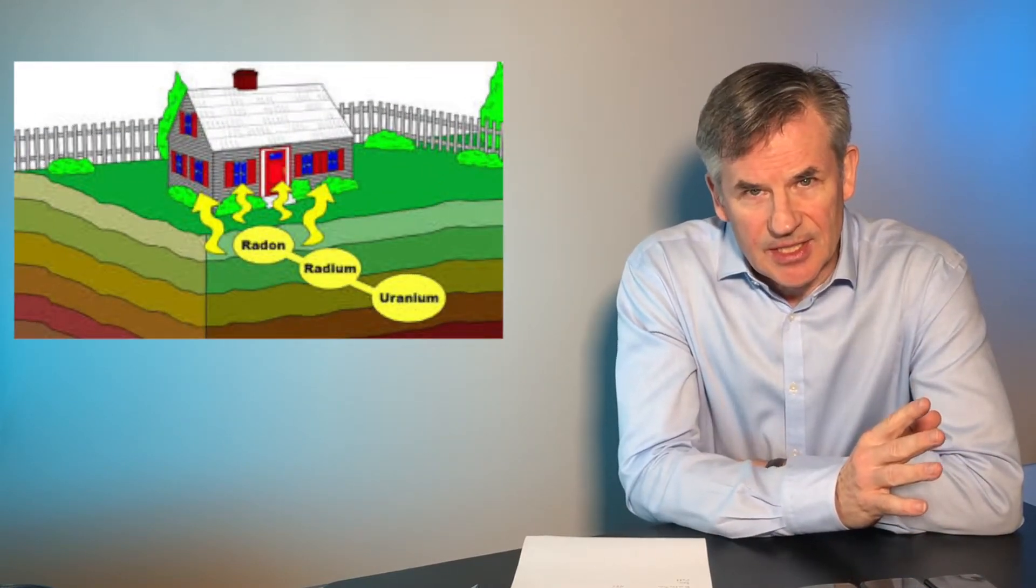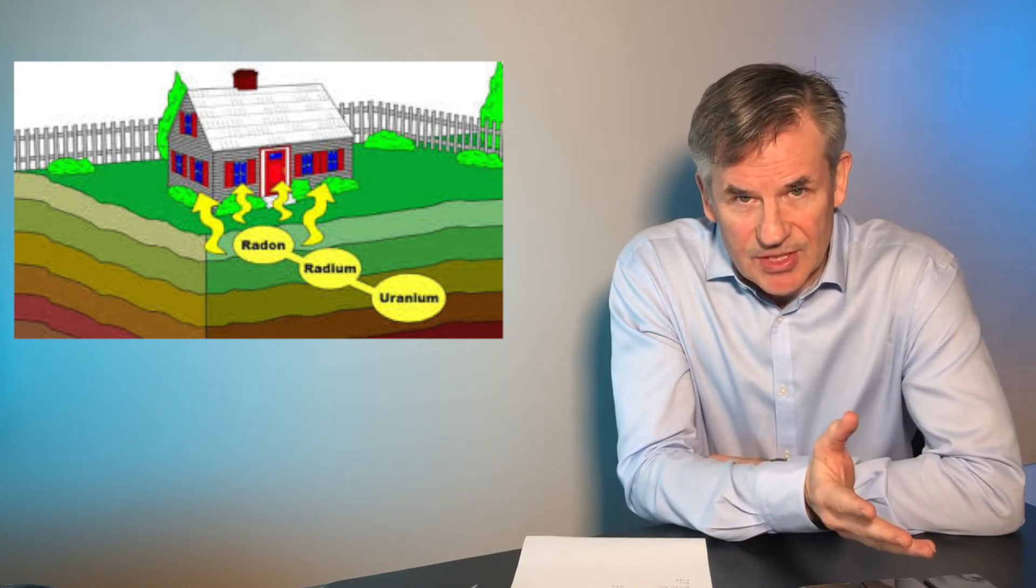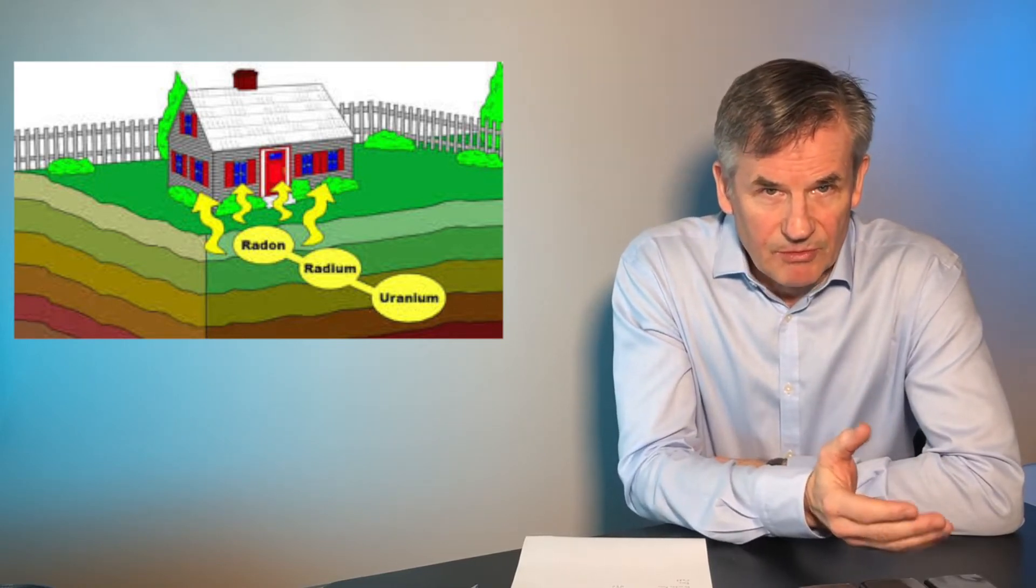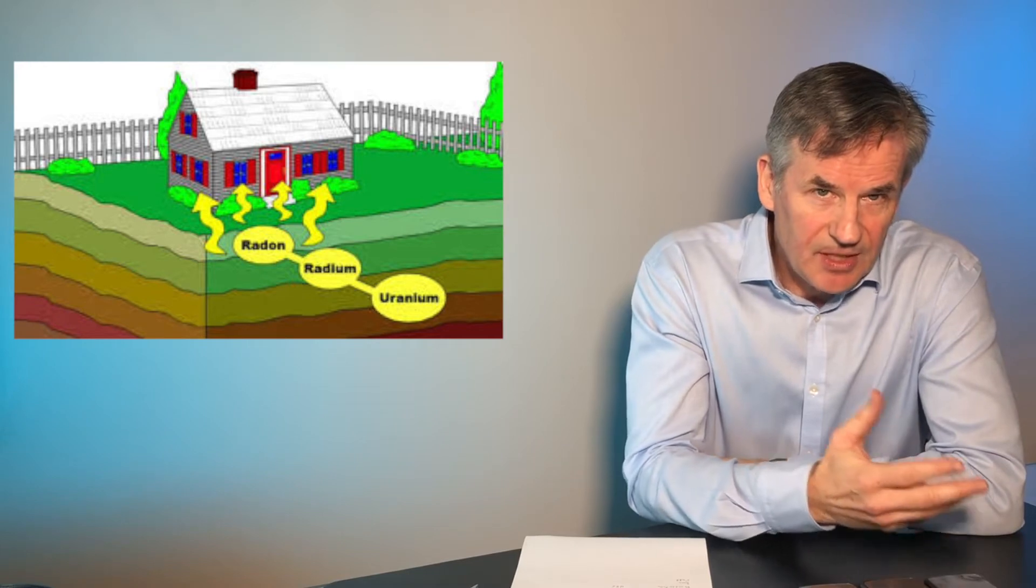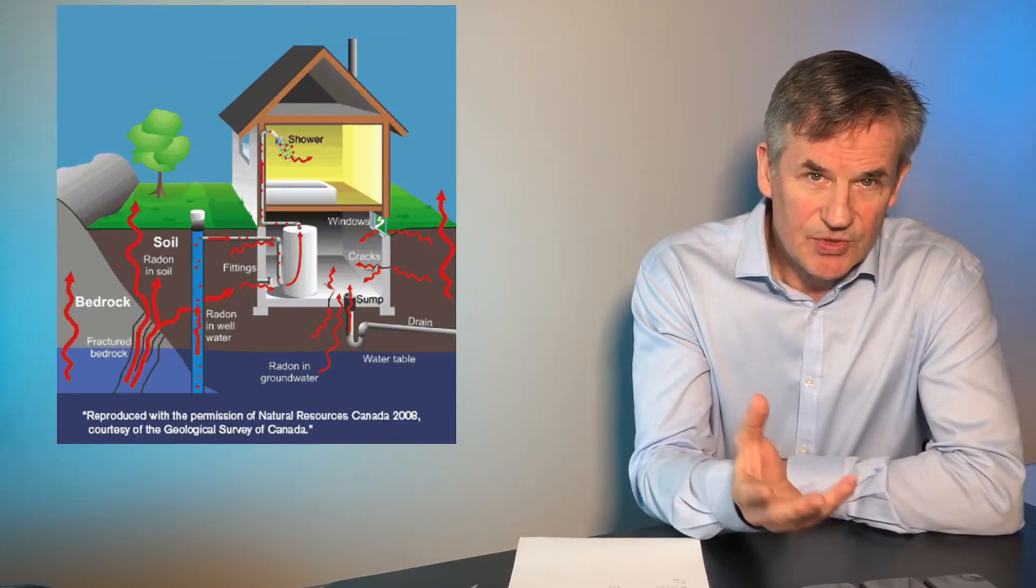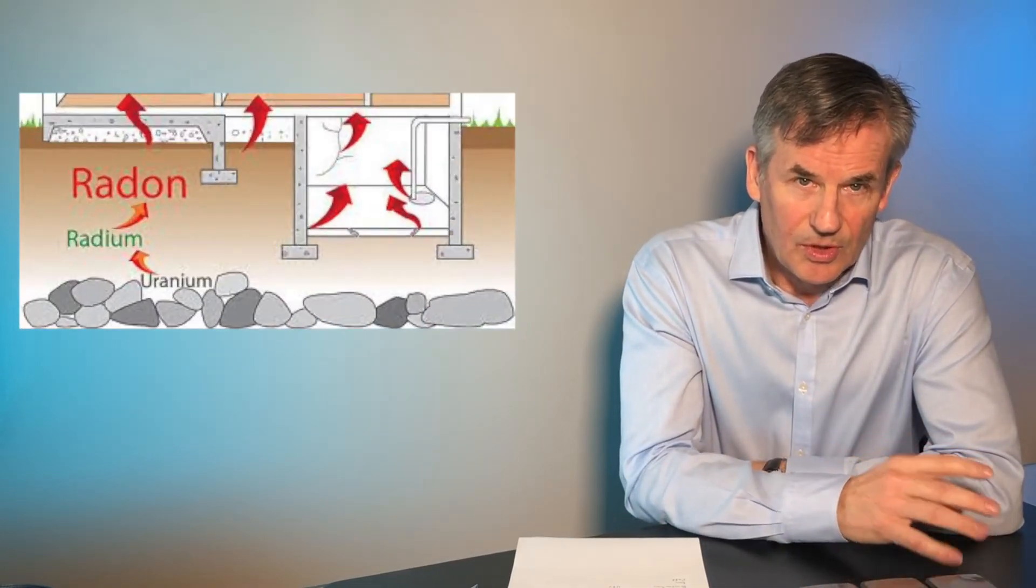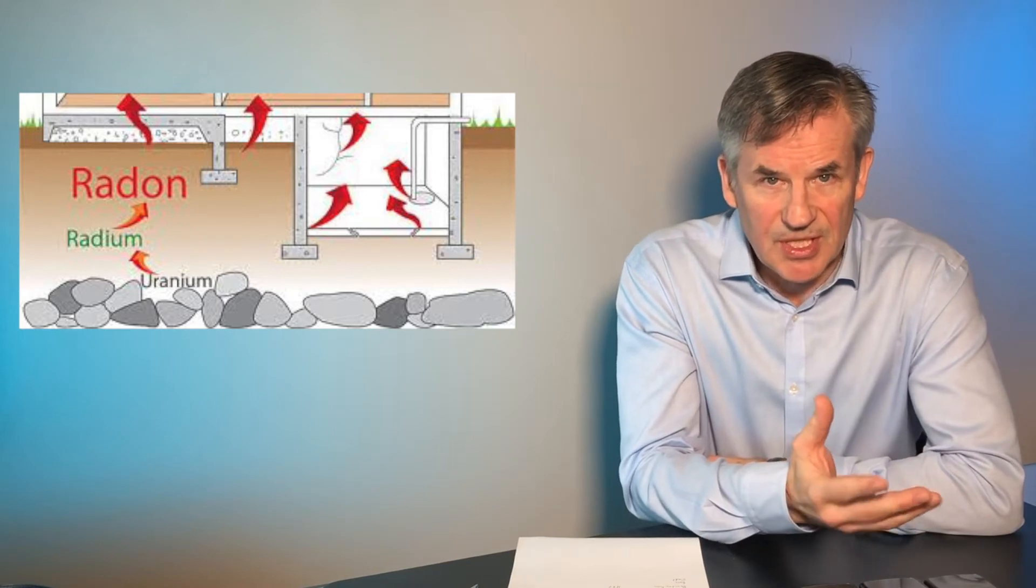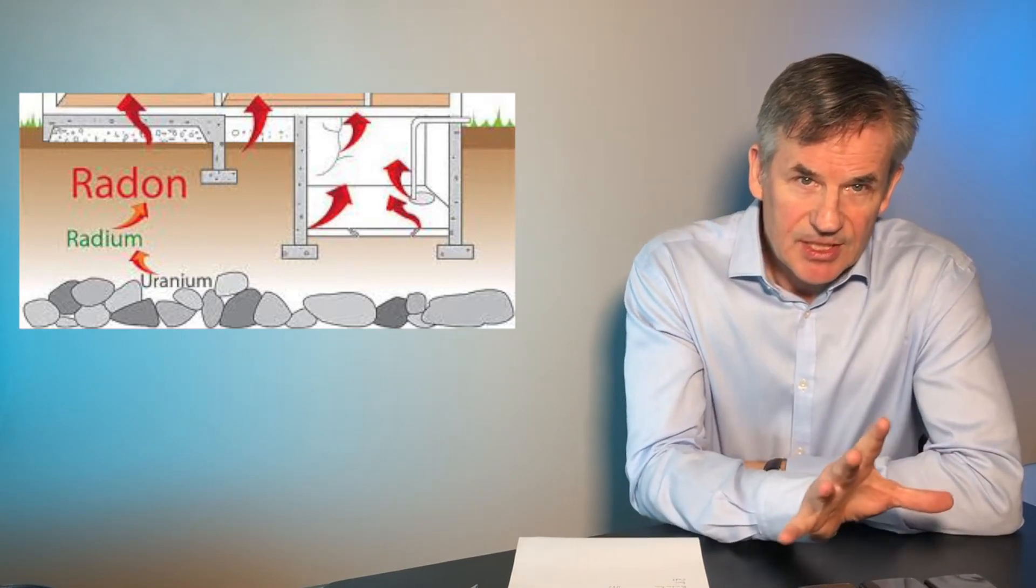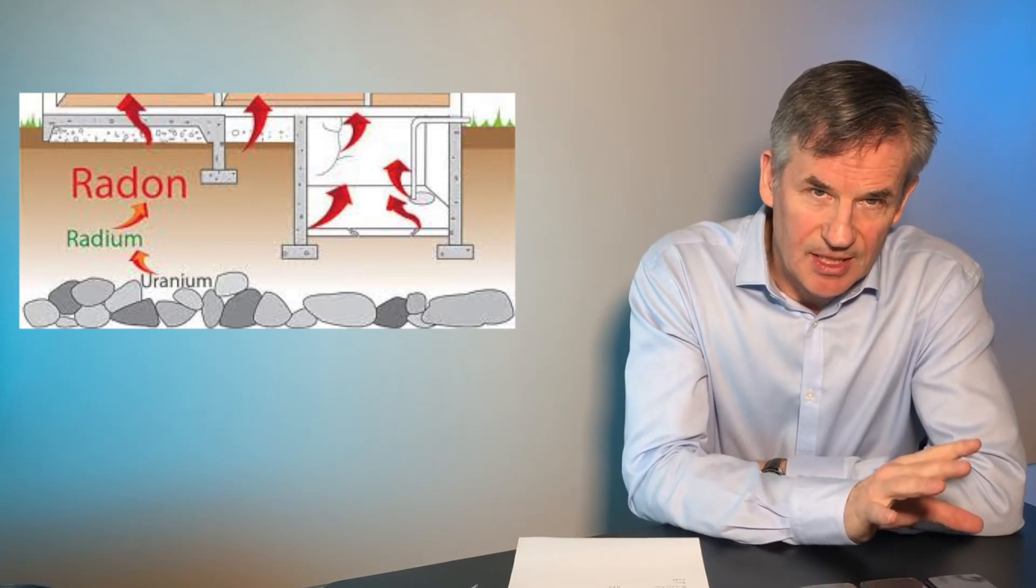Radon is a naturally occurring element in gas form that comes from uranium, which is in the ground. Your house is in the ground, so radon gets into your house through the foundation walls, through cracks, through your floor, through sump pumps—any cracks in your foundation or floor is an opportunity for radon to get in.